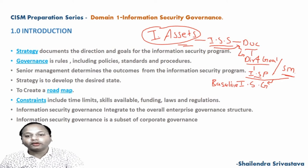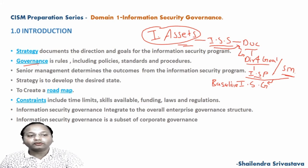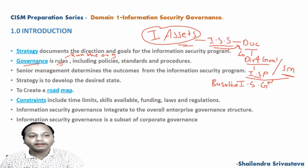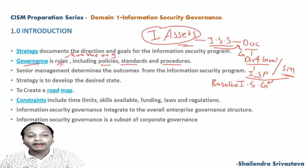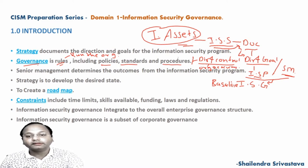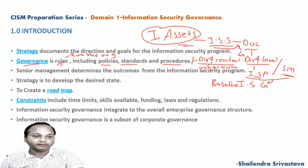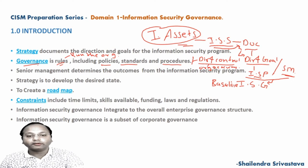Now, what is governance? Governance is broadly defined as the rules of how to run the organization. This includes policies, standards, and procedures, and these policies, standards, and procedures are used to set the direction and control of organizational activity.